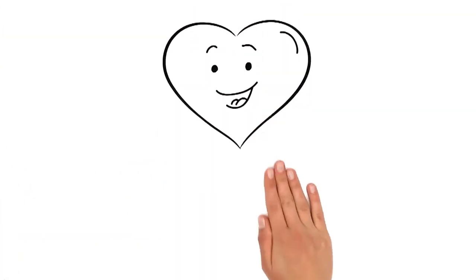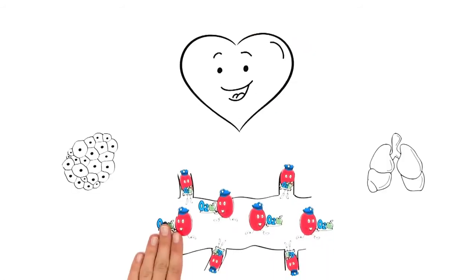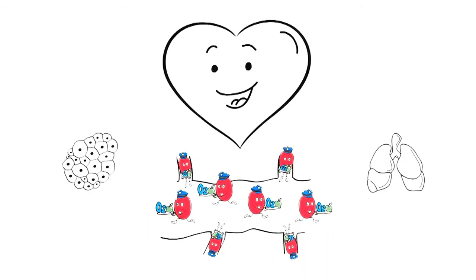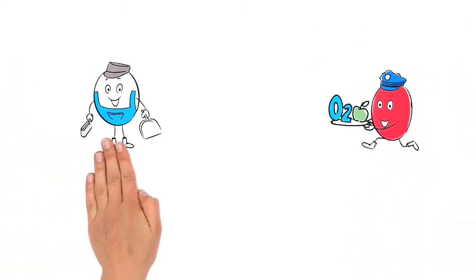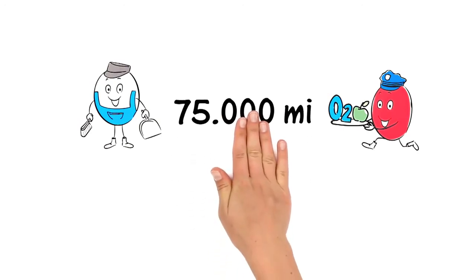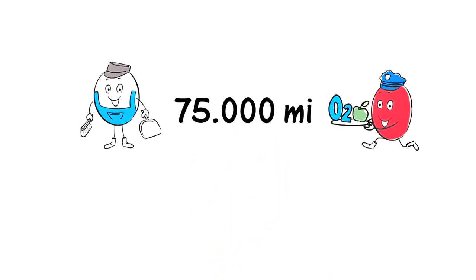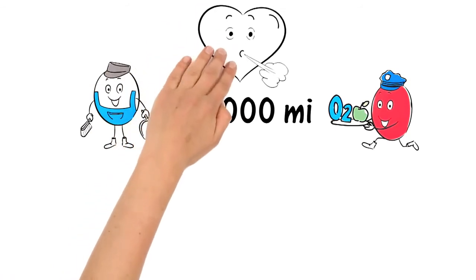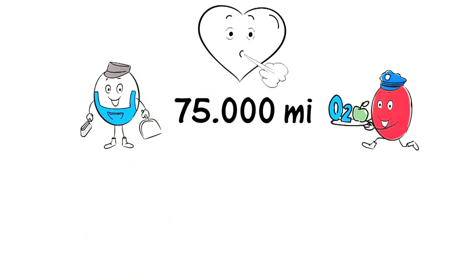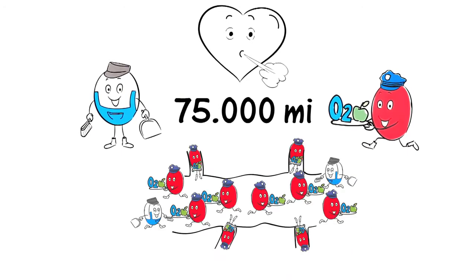Our heart is responsible for transporting these little helpers through our vast network of blood vessels. But our blood cells have to supply and cleanse an area that extends over 75,000 miles of blood vessels. Our heart alone can't possibly do this. Therefore, it needs helpers. The tiny microvessels. These can act as little pumps which help push the blood through the maze of the tiniest blood vessels.